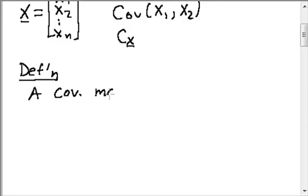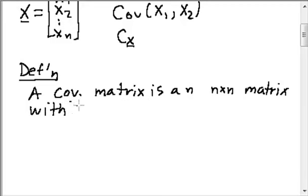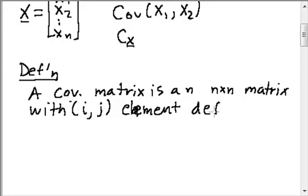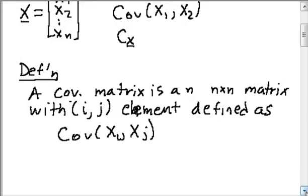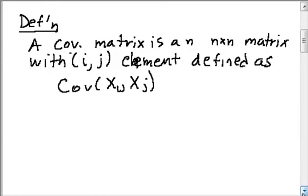A covariance matrix is an n by n matrix with the ij element defined as the covariance between xi and xj. So if I give you the row and column that I want to know about what's in that covariance matrix, you can find the covariance of the x corresponding to the row and the x corresponding to the column, and put that in the matrix.